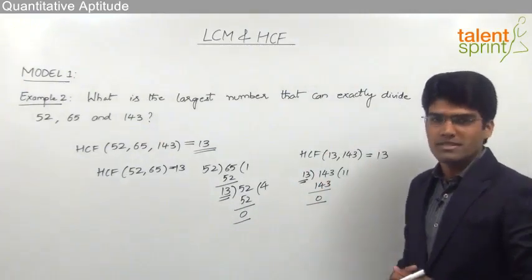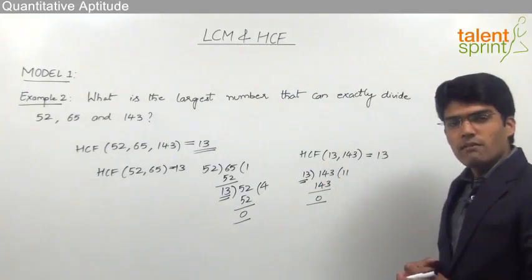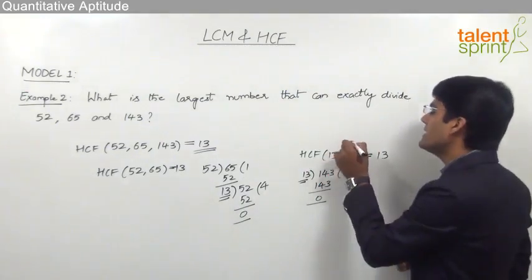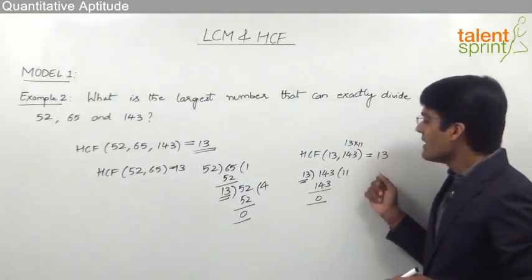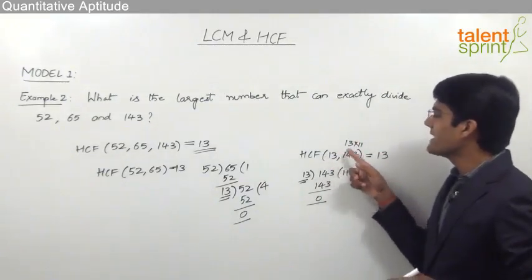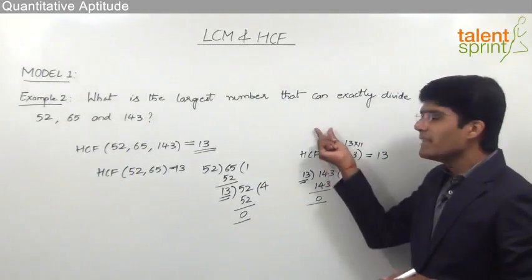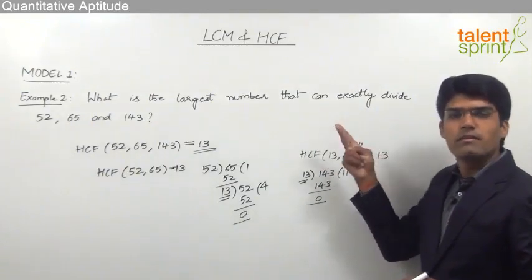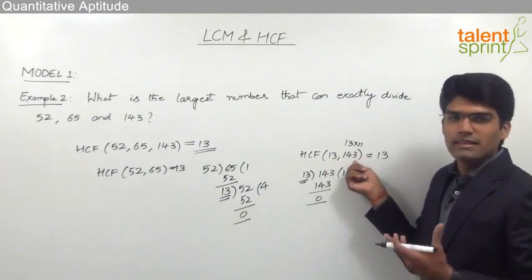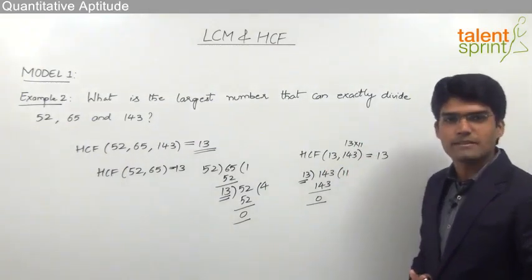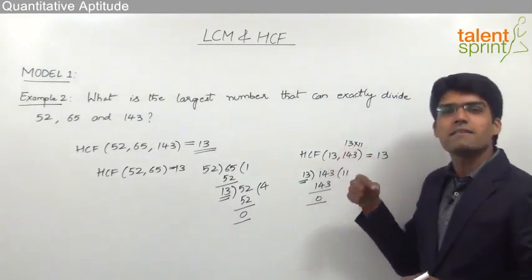One important point: when finding the HCF of 13 and 143, we can observe that 143 = 13 × 11, so 143 is a multiple of 13. Without doing the division, we can directly say 13 itself is the highest common factor. Since the factors of 13 are only 1 and 13, and 13 is a factor of 143, it becomes the HCF. So if the second number is a multiple of the first, the first number itself is the highest common factor.